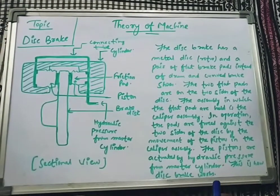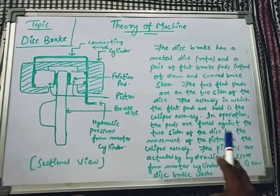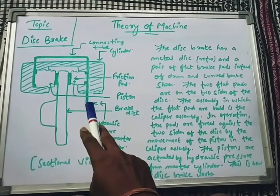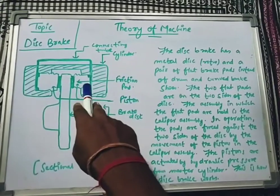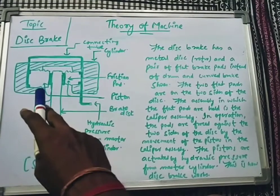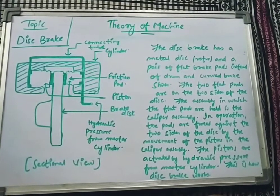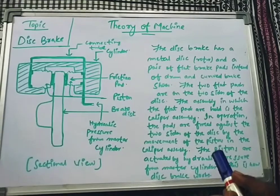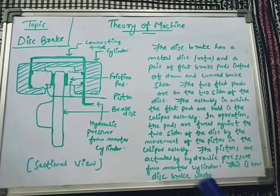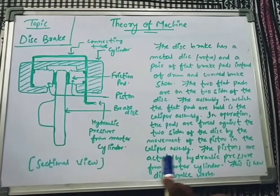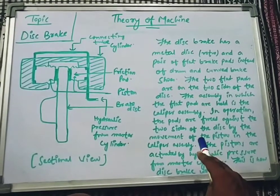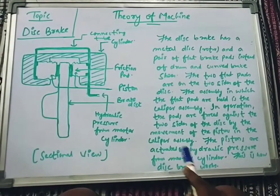In operation, the pads are forced against the two sides of the disc. These frictional pads on both sides of the brake disc are forced against the disc by the movement of the piston in the caliper assembly.